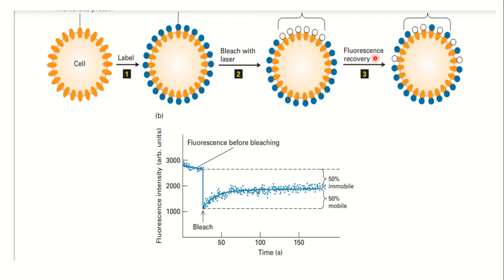After some time, we observe that fluorescence is recovered in the photobleached area. All the proteins were originally present throughout, but what happened is that fluorescent proteins from the surrounding area moved into the bleached region. This happens because the protein or lipid we are examining is mobile — that is why the photobleached area recovered fluorescence from neighboring regions.